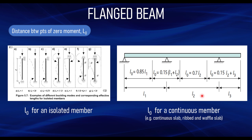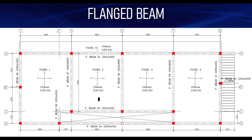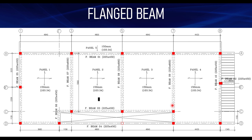Now let's take a couple of examples to understand this. We have a typical reinforced concrete layout of a building, and we want to consider beam FB01 to check for its effective width. The beam has four spans: between grid lines 1 to 3, 3 to 5, 5 to 7, and 7 to 8. We want to determine the effective width of the second span, which is the beam between grid lines 3 and 5.